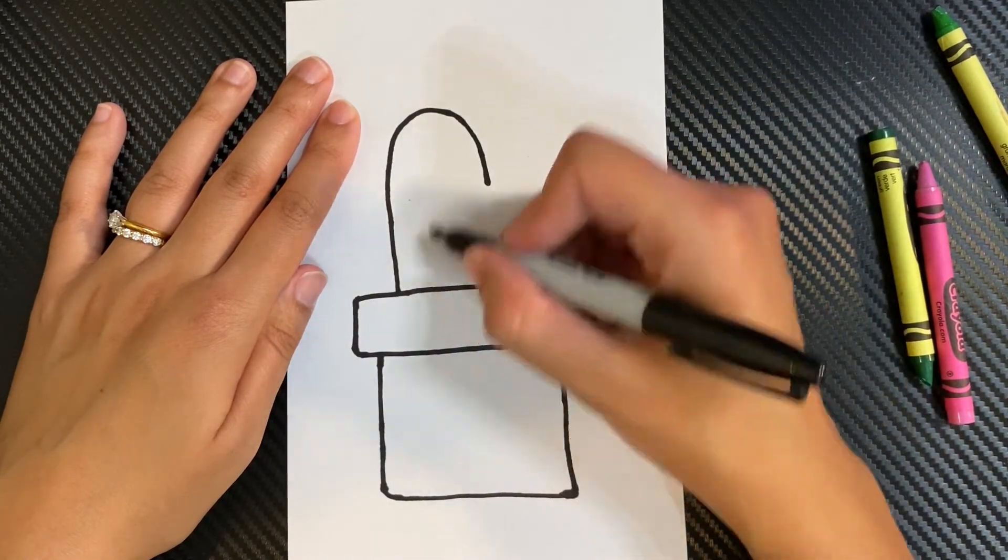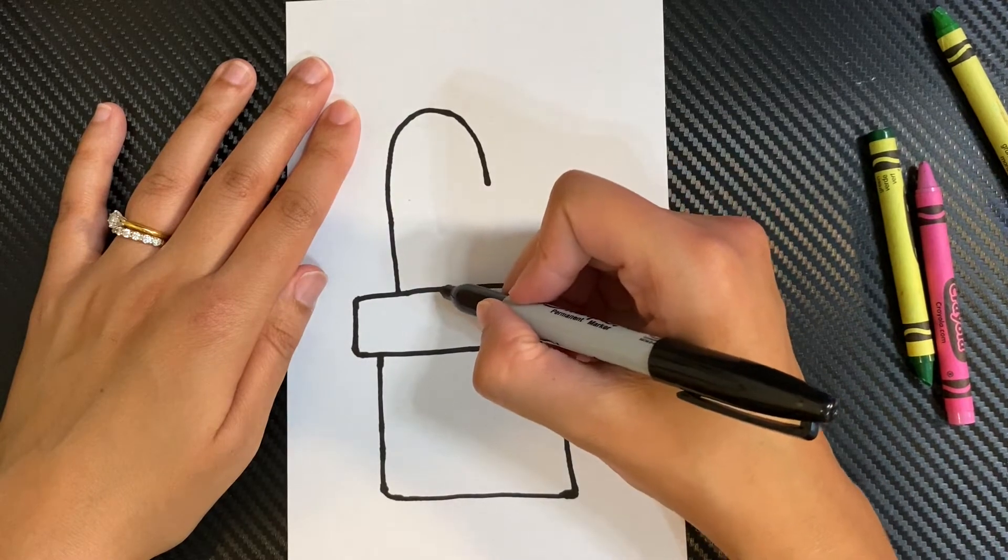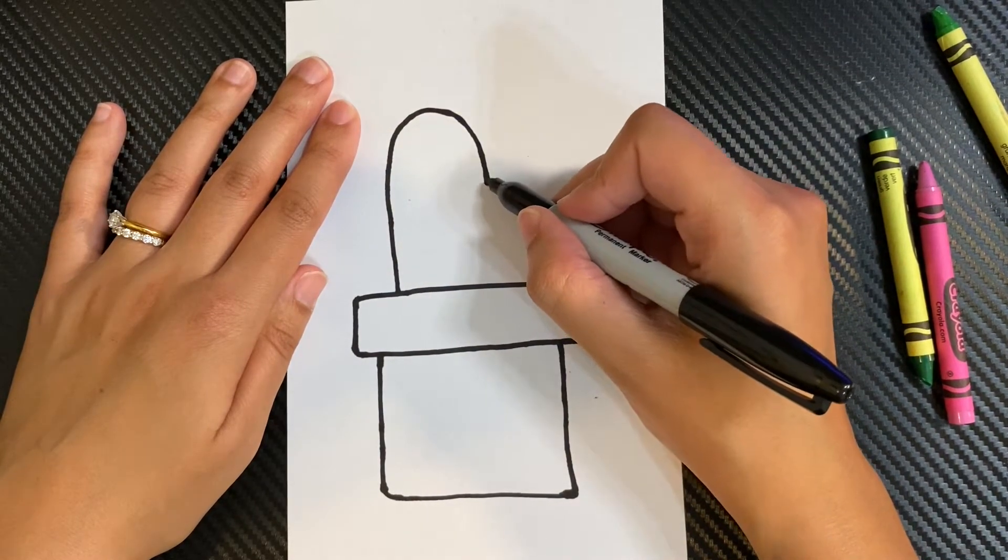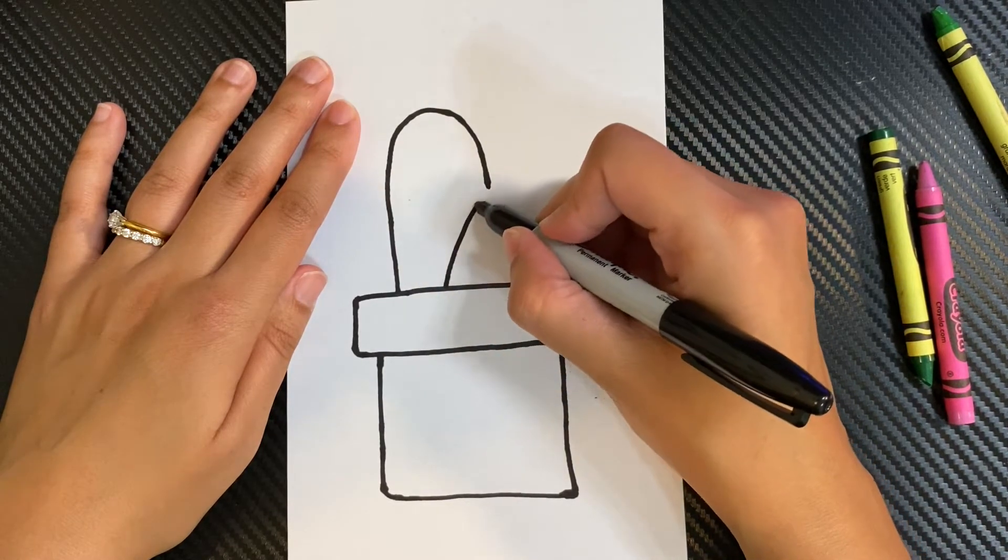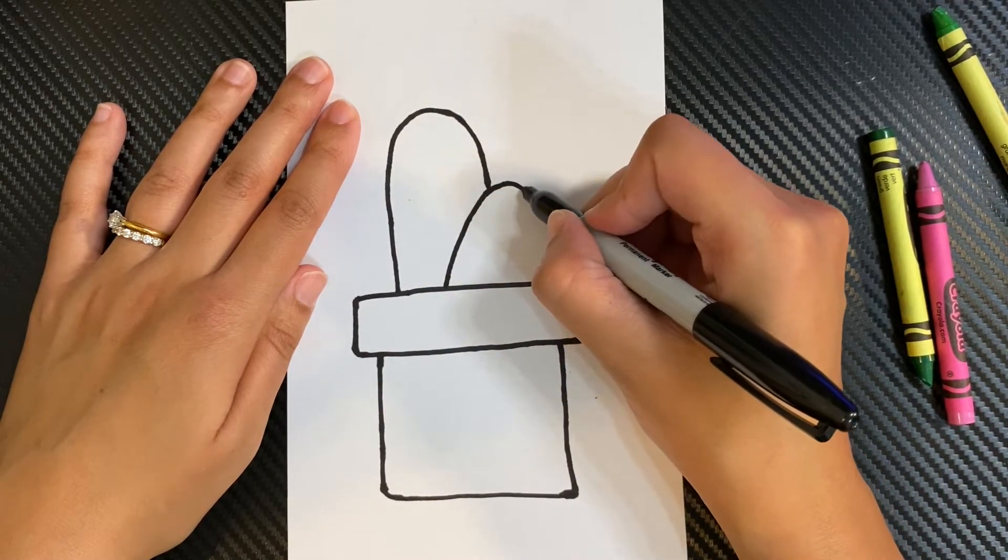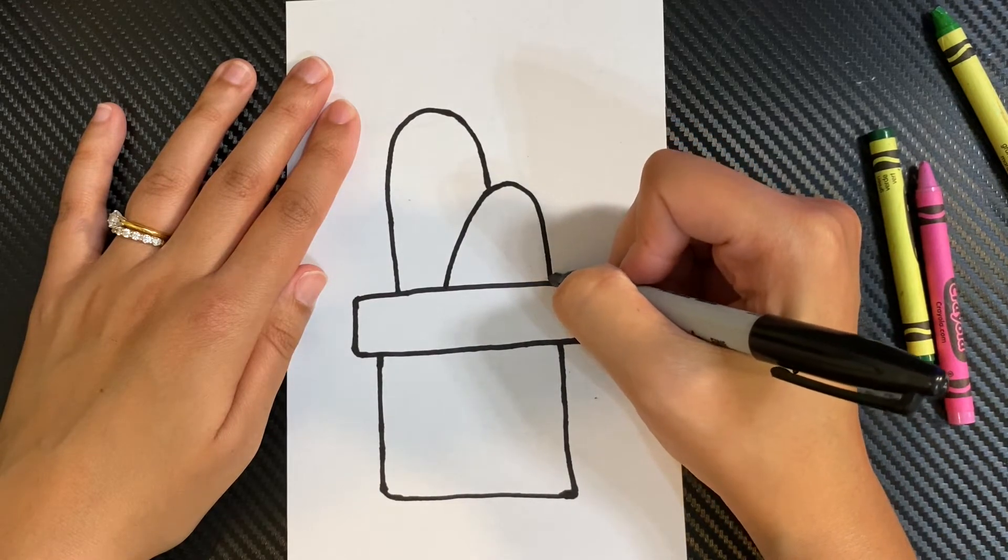And then find the middle of that first cactus. And you're going to try to meet it with this corner right here. So curve up till you get to the corner, and go around and stop.